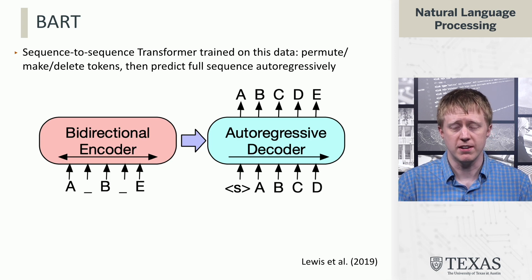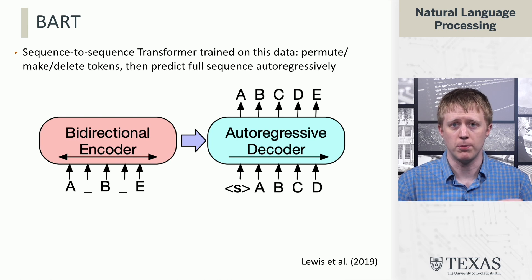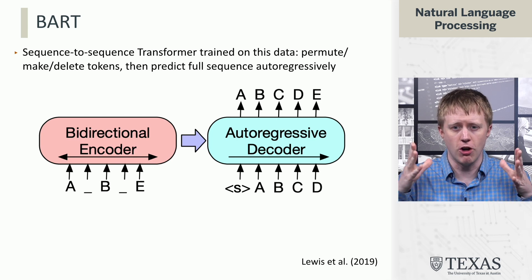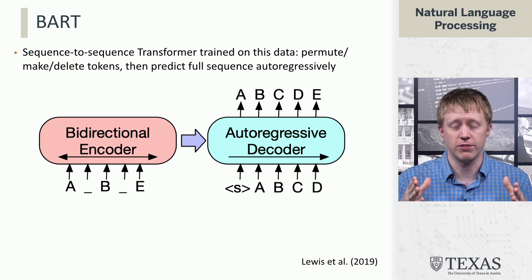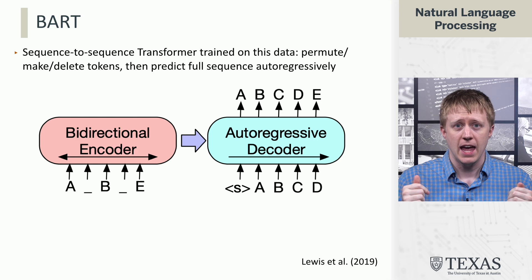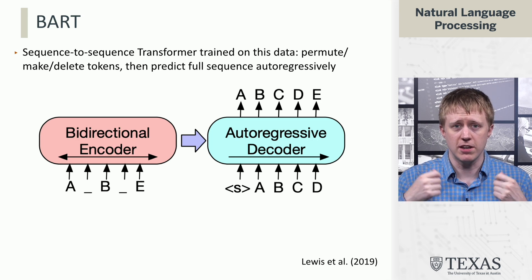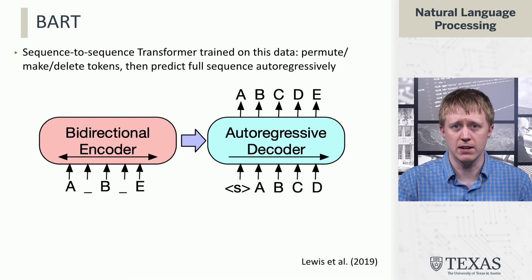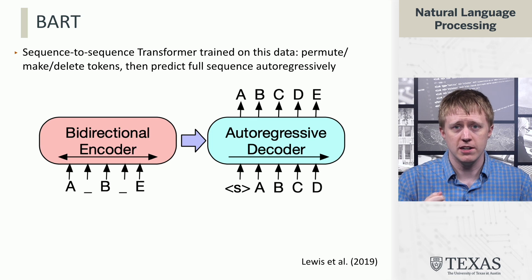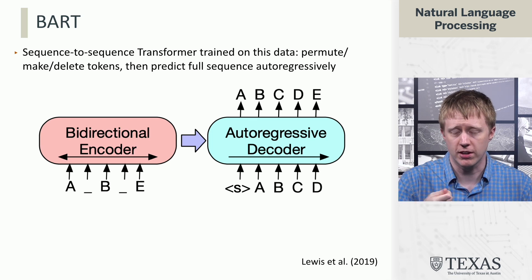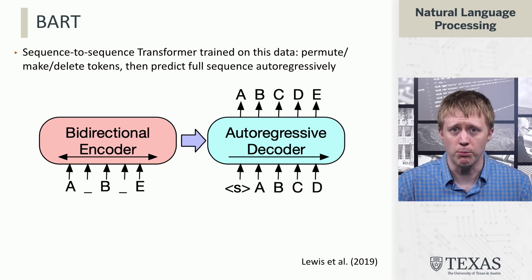How does this work architecturally? What we do is we take a sequence-to-sequence transformer — the full version of the transformer architecture — and we feed into the encoder a noised version of the input, and then the decoder needs to produce the clean version as output.